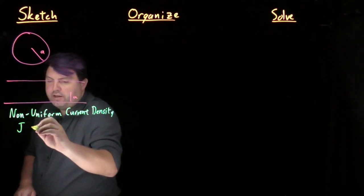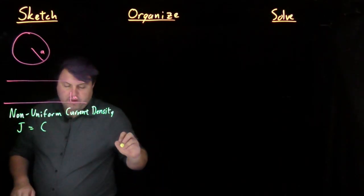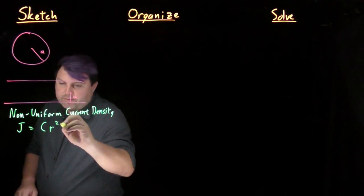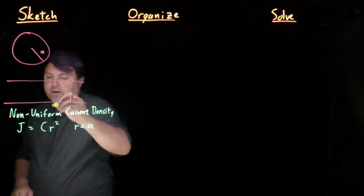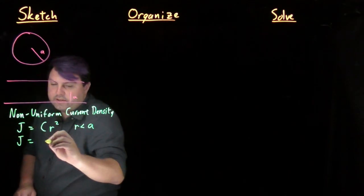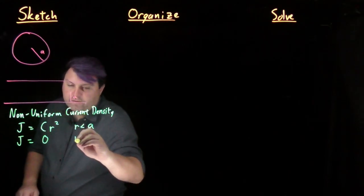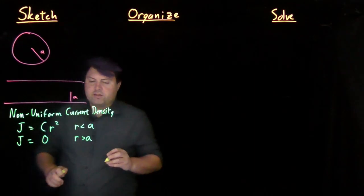We are going to say that our j is equal to c, some constant times r squared for r less than a, the radius of our cylinder, and then j is equal to zero for r greater than a.